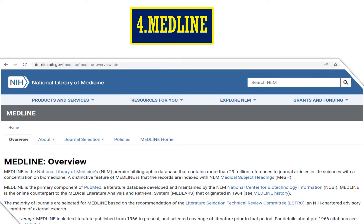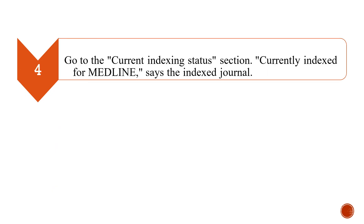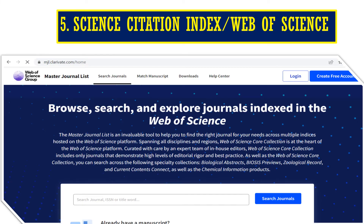Let us see the fourth database, that is MEDLINE. Here, first you need to go to www.nlm.nih.gov/medline. In the search box, we need to type the journal title or the ISSN number — International Standard Serial Number — and then press the search button. If the journal is in the National Library of Medicine — NLM — the details will be displayed. Next, we need to check the current indexing status of that particular journal to find out whether the journal is indexed in the MEDLINE database or not.